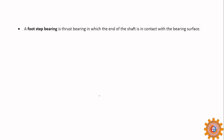There is another type called a footstep bearing, which is a thrust bearing. In a footstep bearing, the journal rotates inside the bearing and the end of the journal has contact with the bearing surface, creating friction at that end. This thrust friction makes it a footstep bearing.